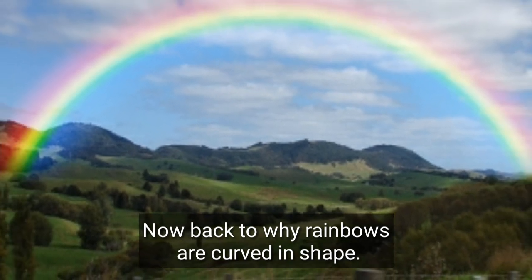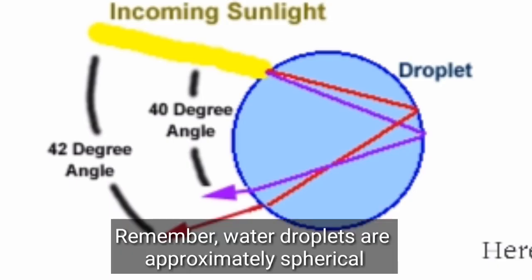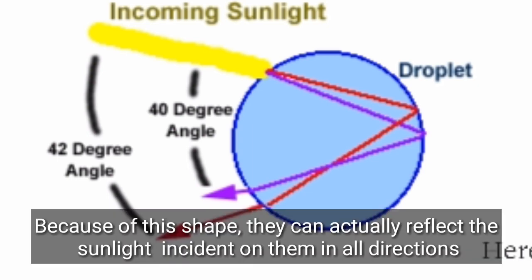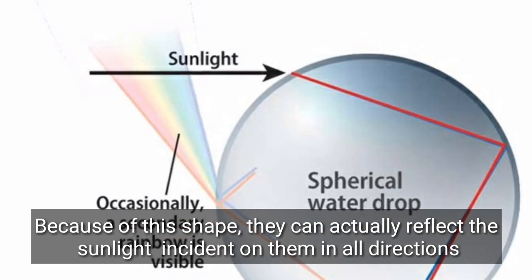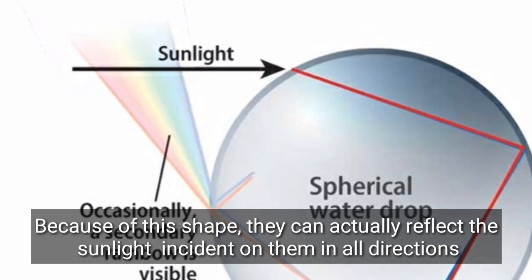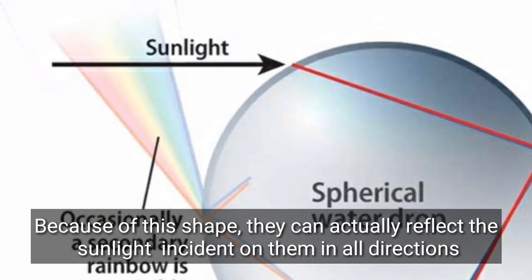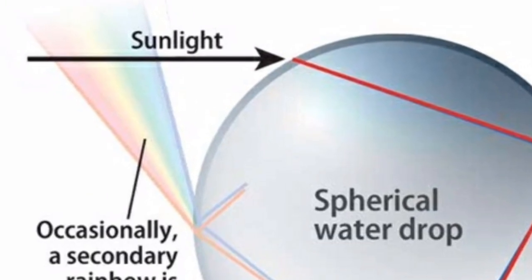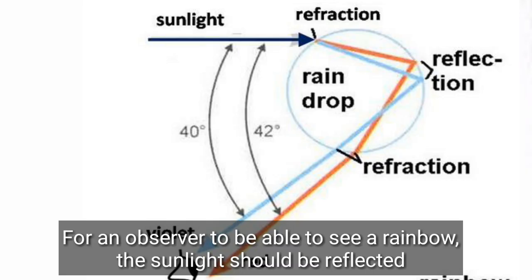Remember, water droplets are approximately spherical. Because of this shape, they can actually reflect the sunlight incidenting on them in all directions. For an observer to be able to see rainbows, the sunlight must be reflected back to the observer at an angle of approximately 42 degrees.